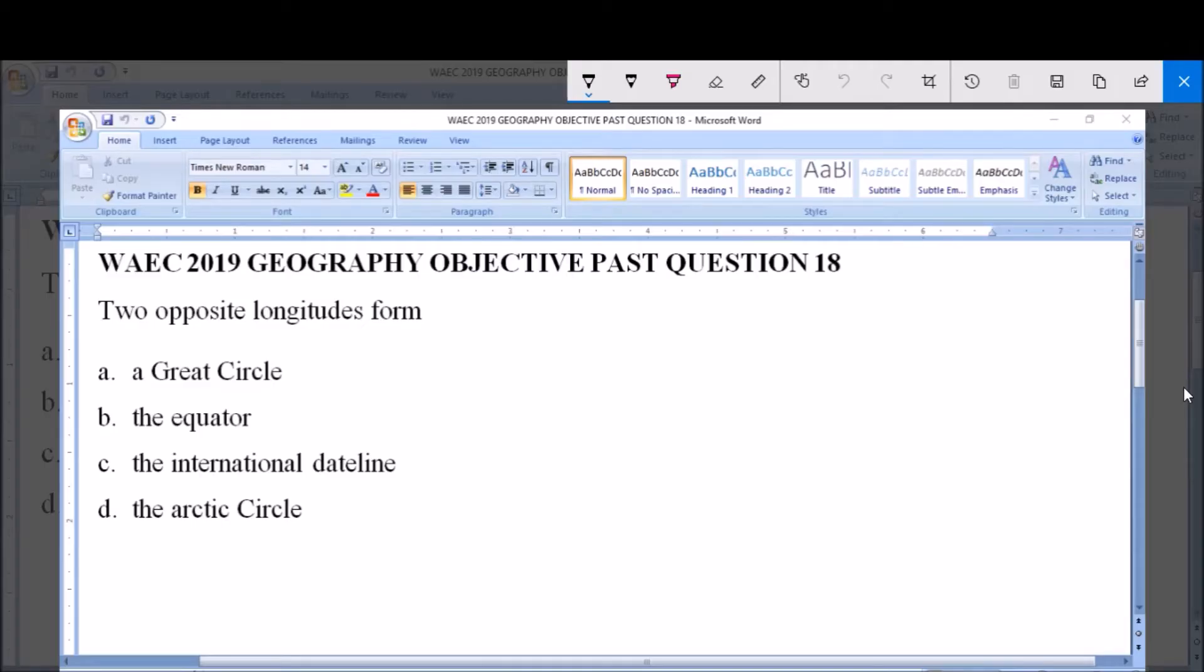Hello, I'm going to be answering my 2019 Geography Objective Parts Question 18. Two opposite longitudes form: A, a Great Circle,